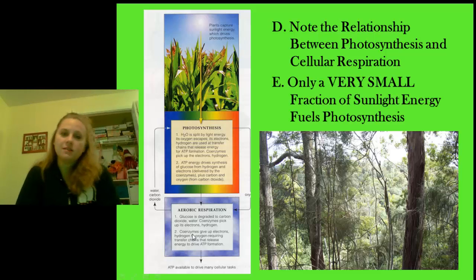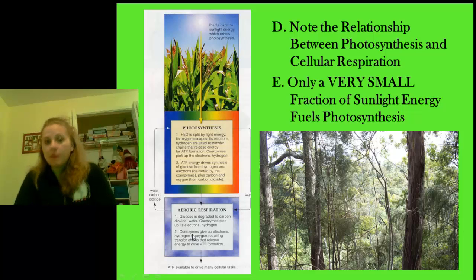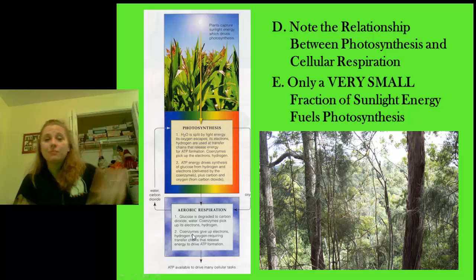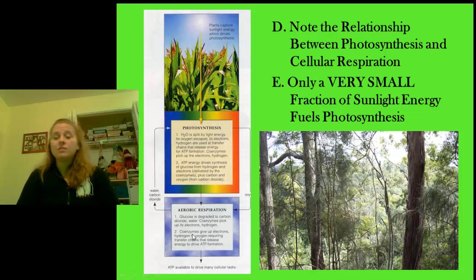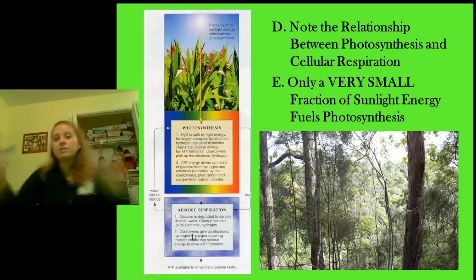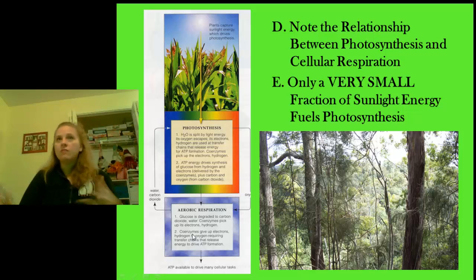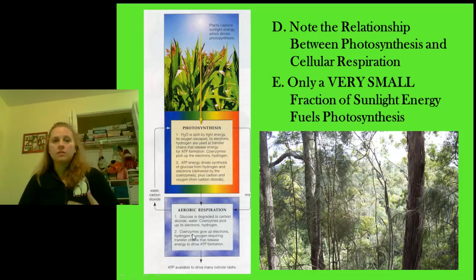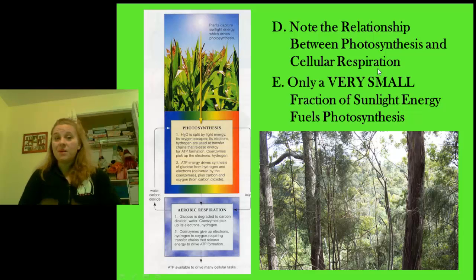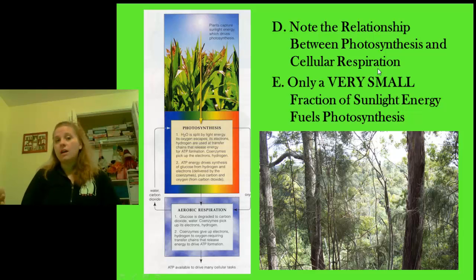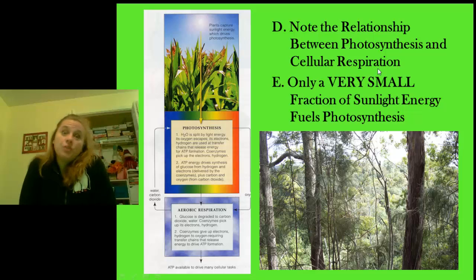One thing I really want to stress is that it's a very small amount of the actual sunlight coming into the planet that actually fuels photosynthesis — there are very particular sections of the spectrum. If you've ever seen a prism or a rainbow, we know that light is made up of multiple wavelengths that reflect different colors. Photosynthetic organisms only utilize a fraction of visible light, because all light is made up of different types of radiation, rays, and wavelengths that plants and photosynthesizers don't even use.